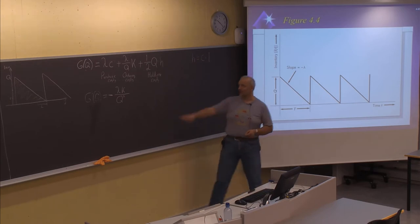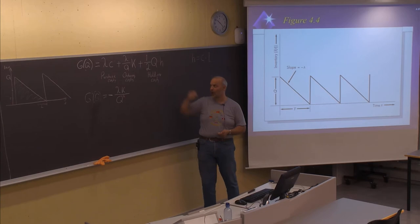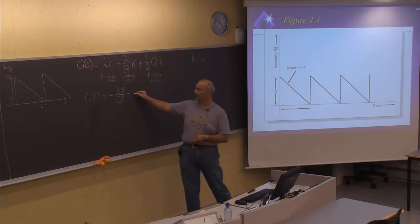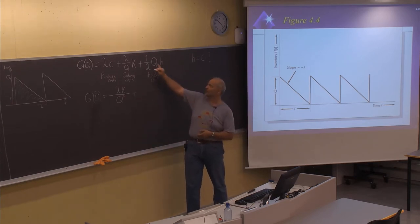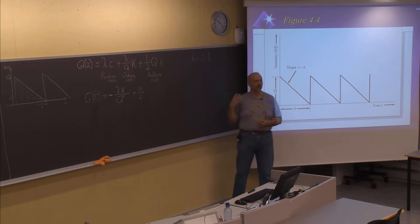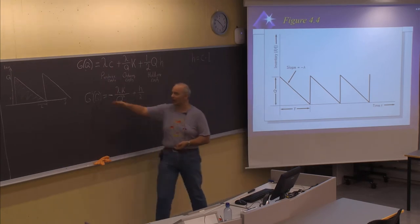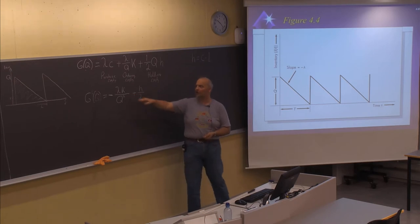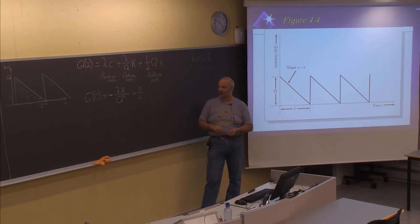Deriving the holding cost: here we have Q, the variable, to the power of 1. Deriving that part, you are left with 1, and you have H divided by 2. So this is now the expression for the derived cost function: the derived G function is minus lambda K divided by Q squared, plus H divided by 2.